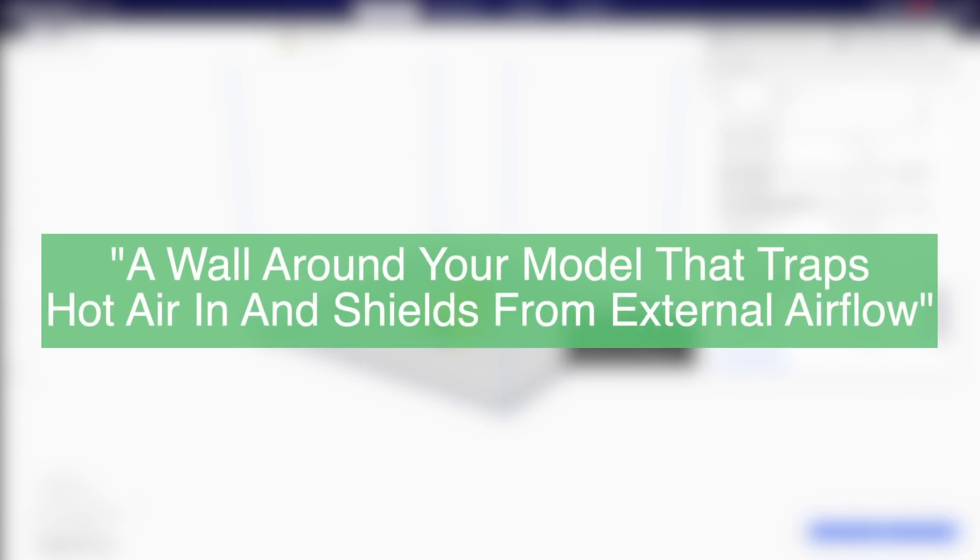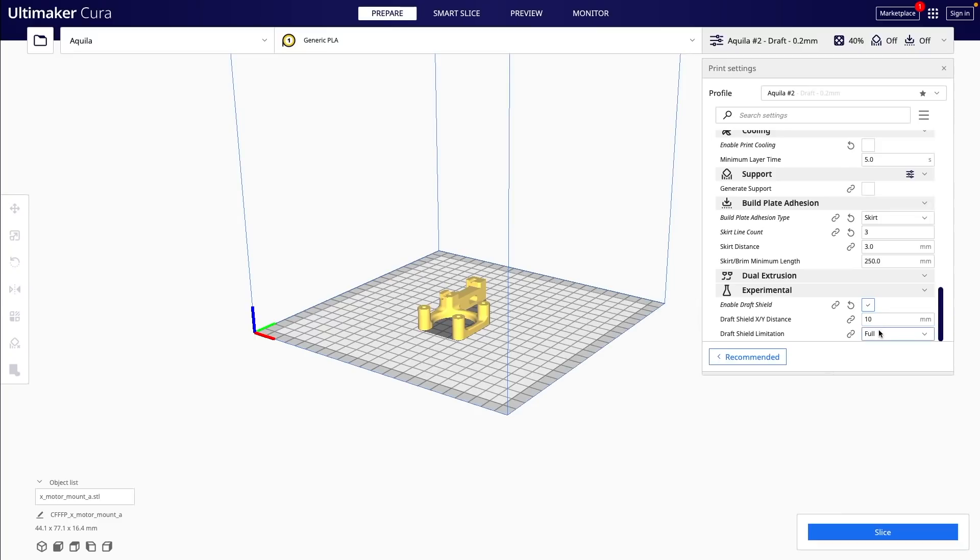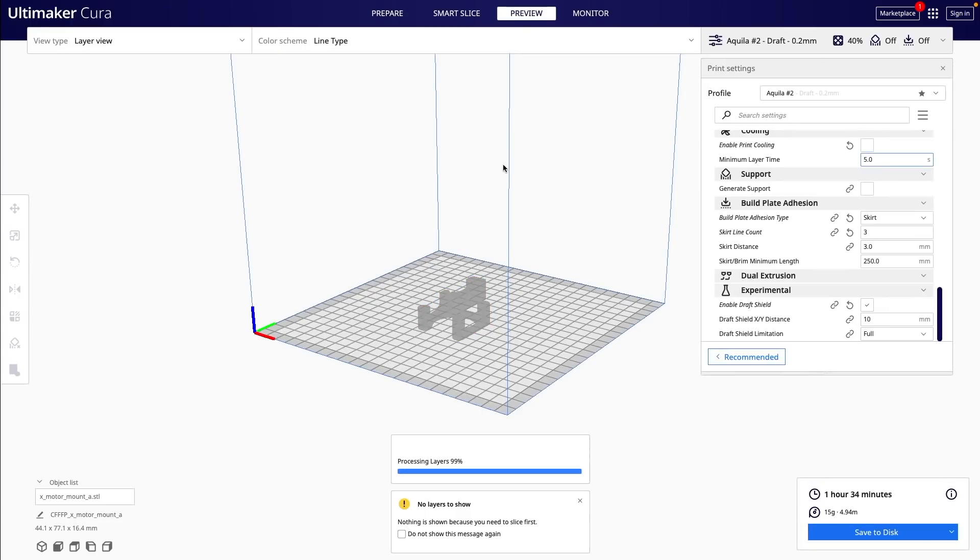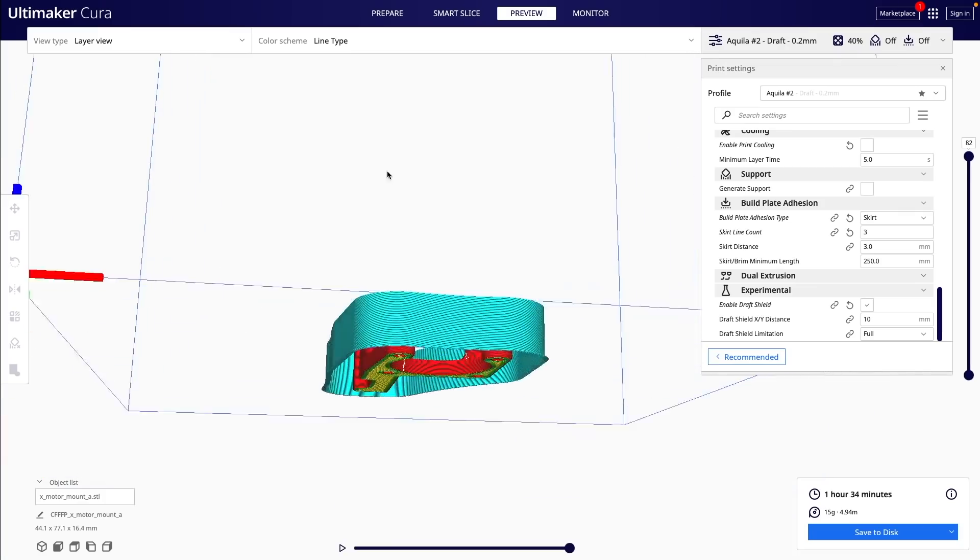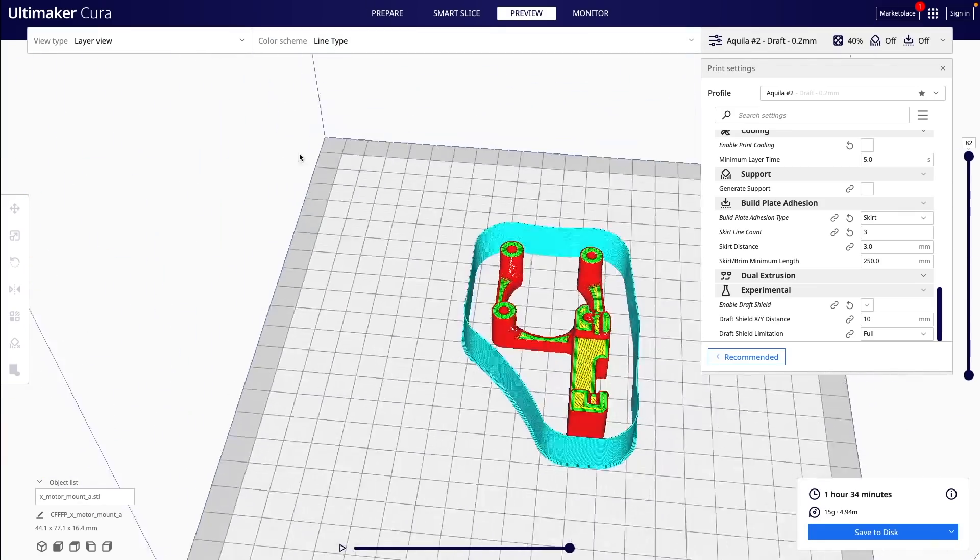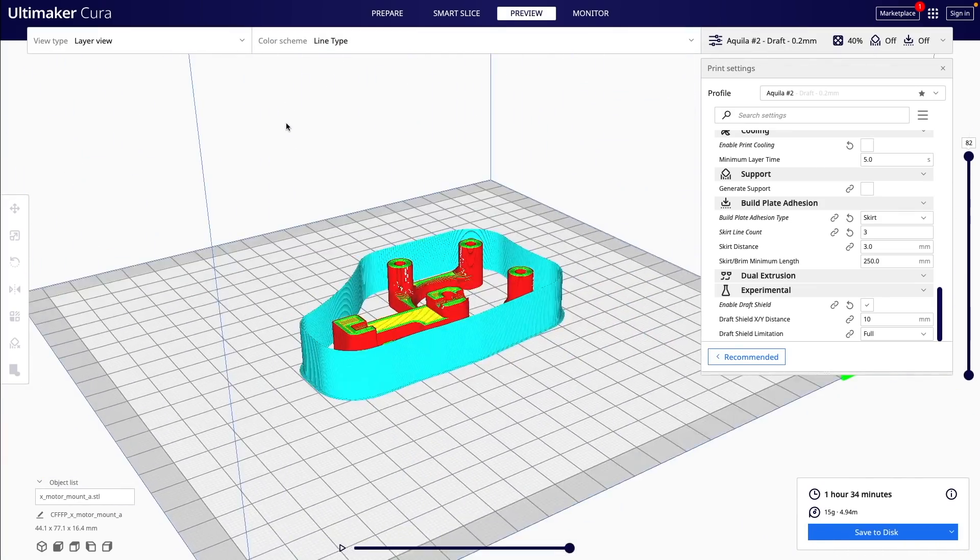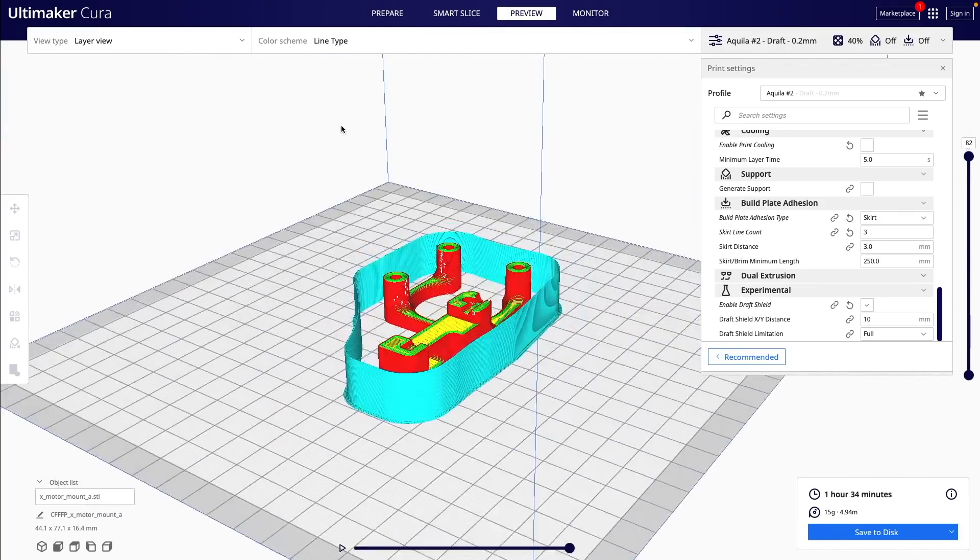If you're familiar with skirts, picture a skirt but one that goes up much higher than just the first layer. I then re-sliced the same model with the exact same settings, but I enabled the draft shield. I went with a default 10 millimeter XY distance and full for the draft shield limitation, which means it will build the wall all the way up to the top of the model.